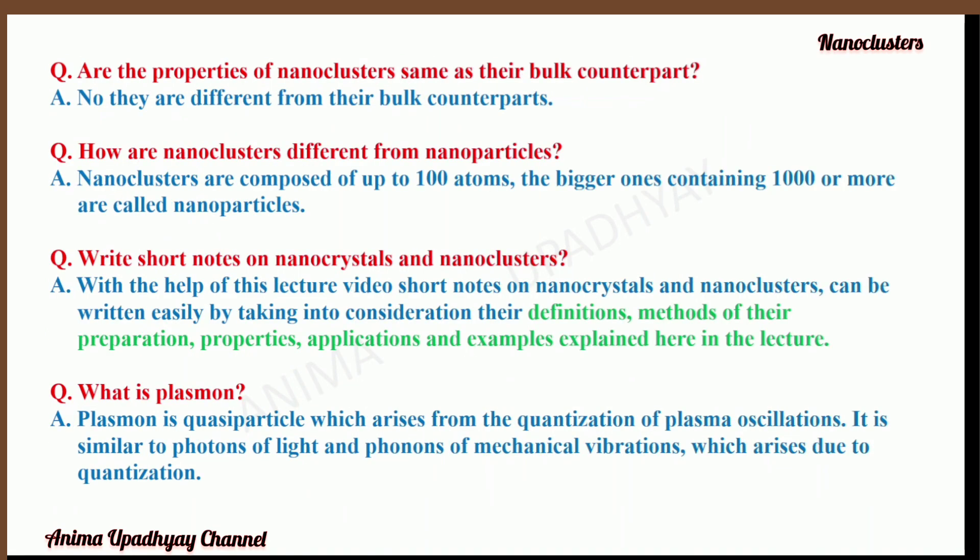Are the properties of nanoclusters the same as their bulk counterparts? No, they are different from their bulk counterparts, as already discussed with many examples. How are nanoclusters different from nanoparticles? Nanoclusters are composed of up to 100 atoms, whereas the bigger ones containing 1000 or more atoms are called nanoparticles.